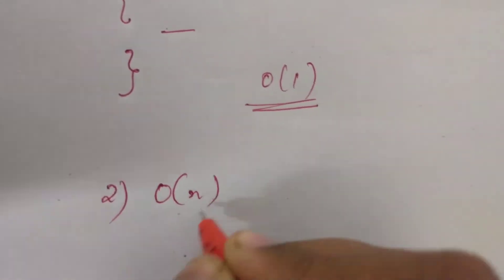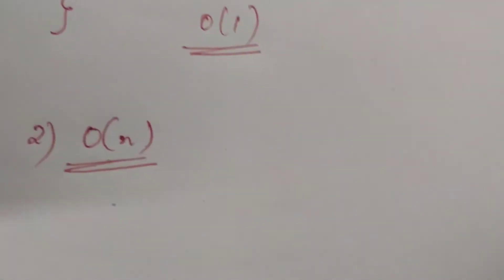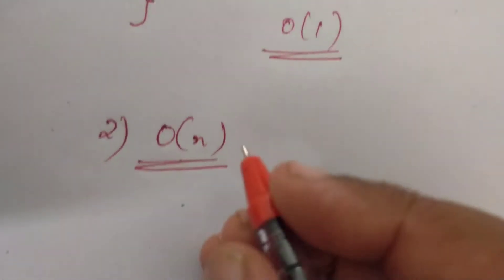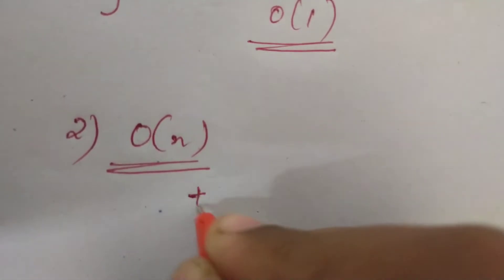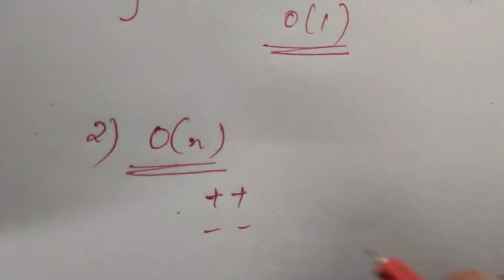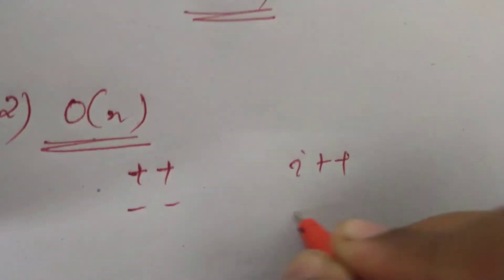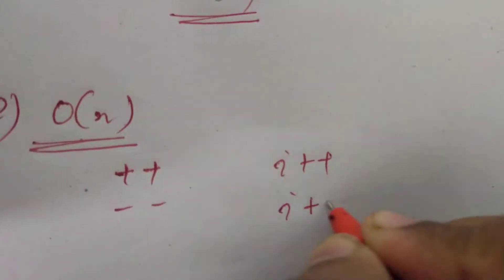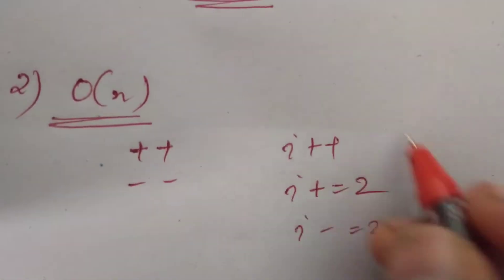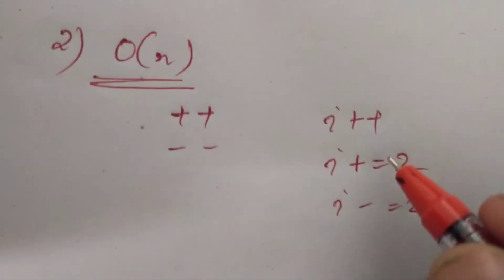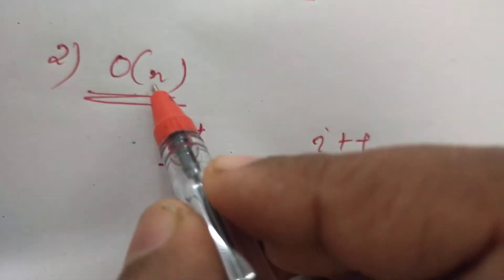For order of n complexity, the loop variable is incremented or decremented by a constant amount. For example, i plus plus, i plus equals 2, or i minus equals 2 — these are all incremented or decremented by a constant amount, giving order of n complexity.